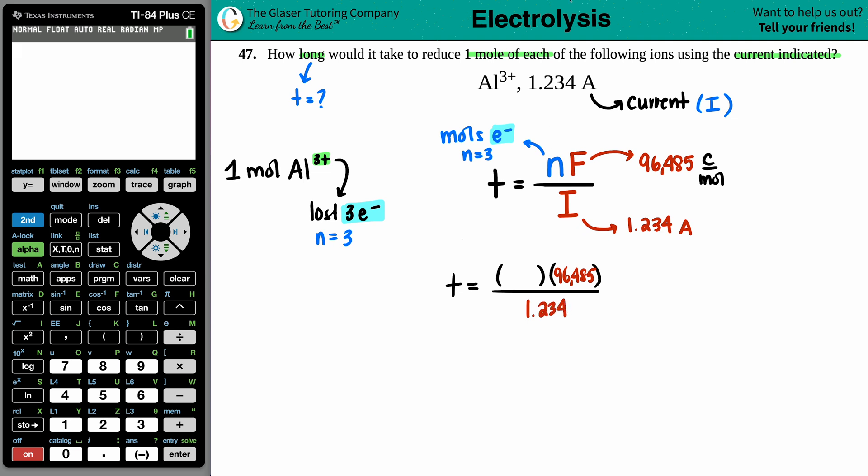So T equals 3 times 96,485, divided by, oh, what was going on there?